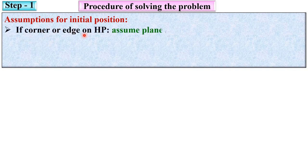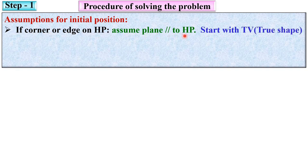If a corner or edge on the HP is given in the description, then you have to assume the plane is parallel to HP, and so you have to start with the top view, because when the plane is parallel to HP you can see the true shape of the plane in the top view.